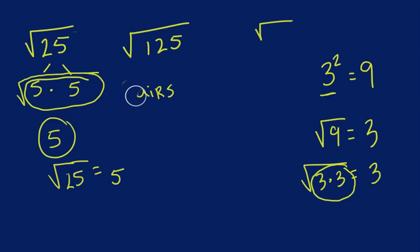Now let's go ahead and erase this really quick, and we'll get a different color. But let's look at taking the square root of 125. So we have 125 right here, and let's break that down.